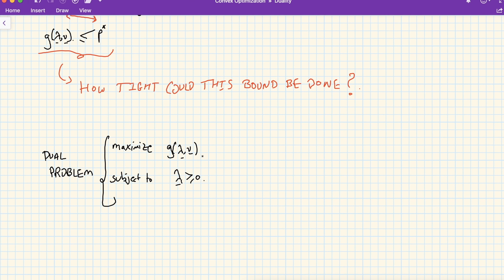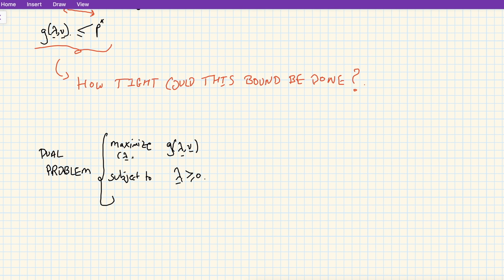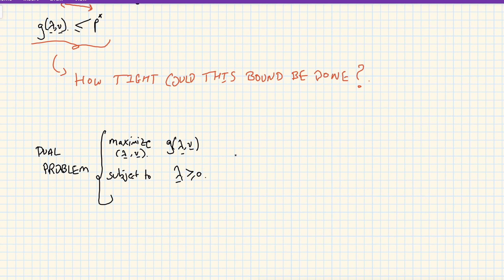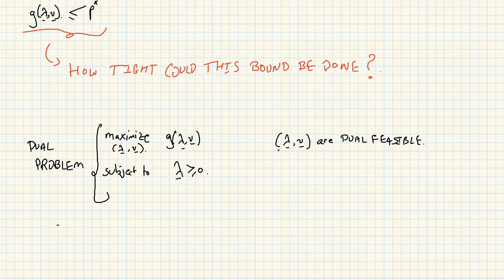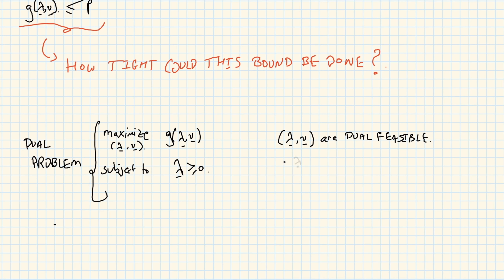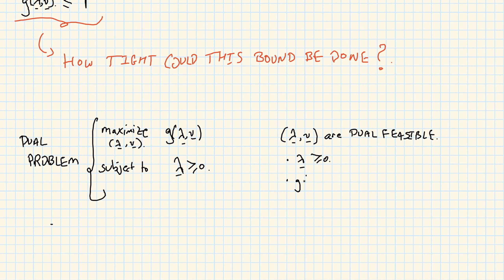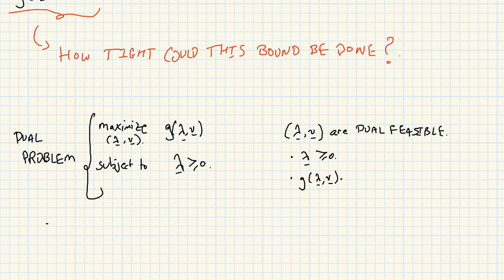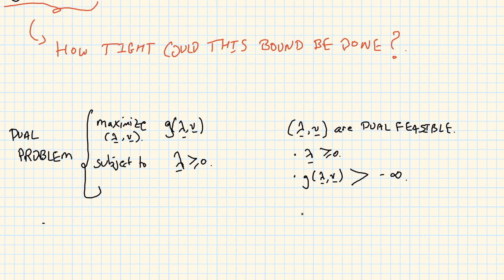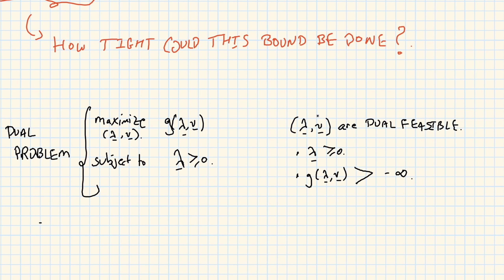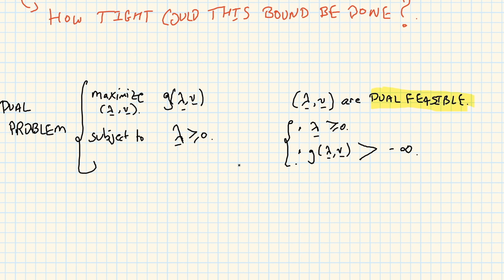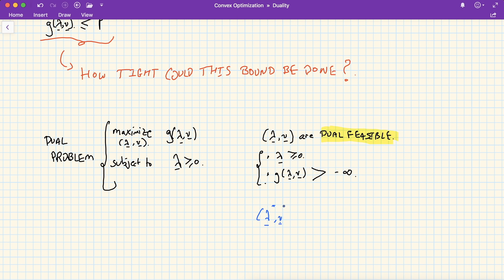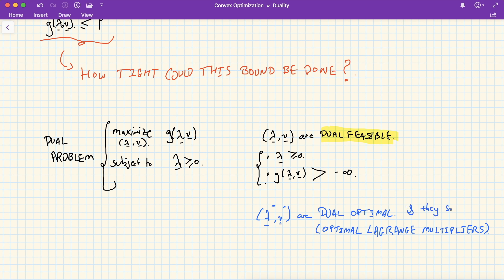Dual feasible is used since maximization takes place with respect to dual variables lambda and mu. A pair (lambda, mu) is dual feasible when lambda is positive and g(lambda, mu) is not minus infinity — it must be finite. Any pair satisfying both conditions is said to be dual feasible. Similarly, lambda-star and mu-star are called dual optimal, or optimal Lagrange multipliers, if they solve the dual problem.